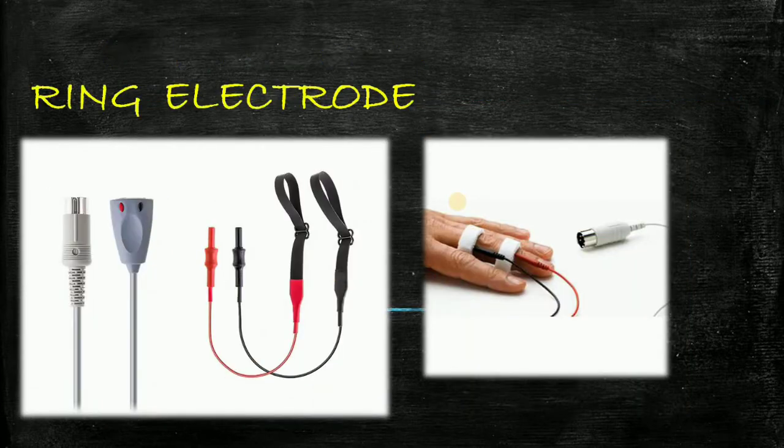Next is ring electrode. Ring electrode is the type of electrode which are used for sensory nerve stimulation and recording and work with most EMG systems. You can see in this picture there is a ring electrodes which is used to stimulate the sensory nerve. In the second picture you can see that there is a ring electrodes which is placed in a finger.